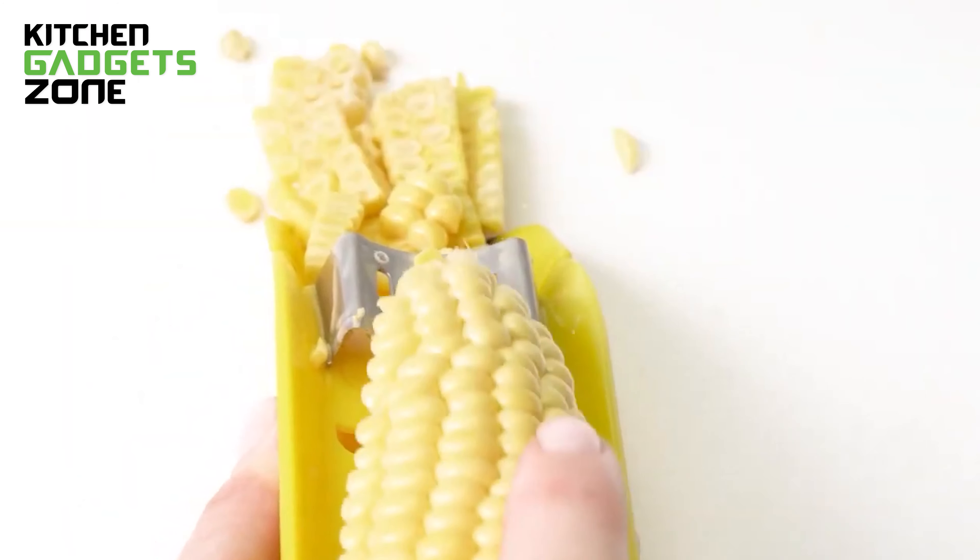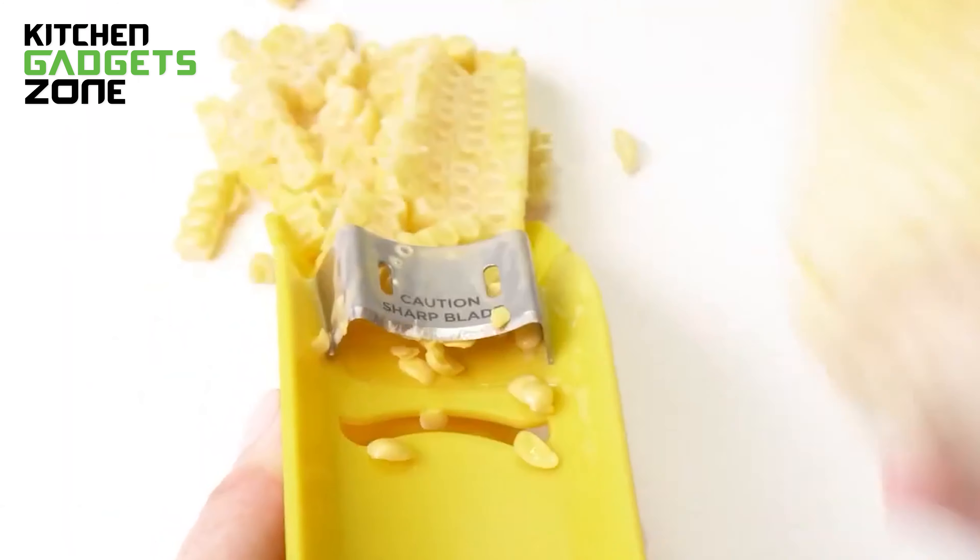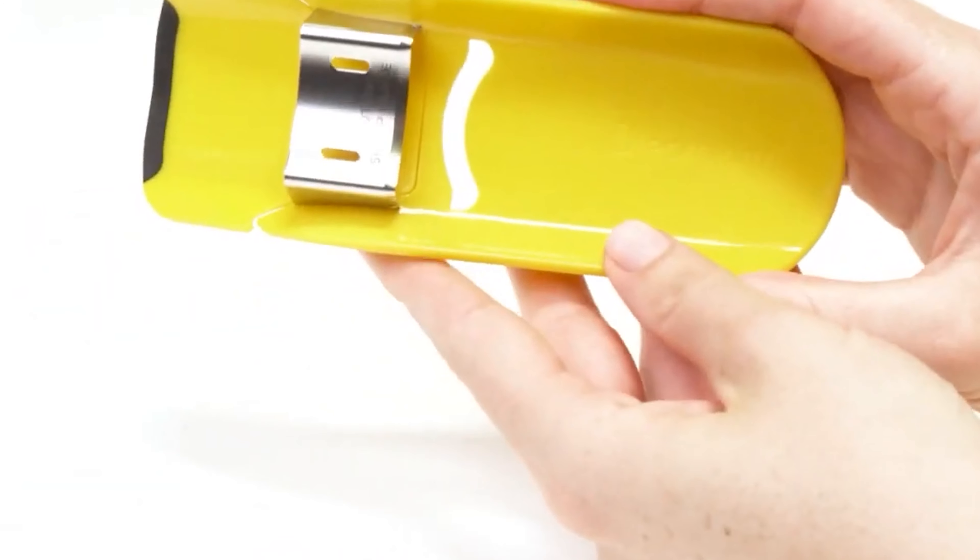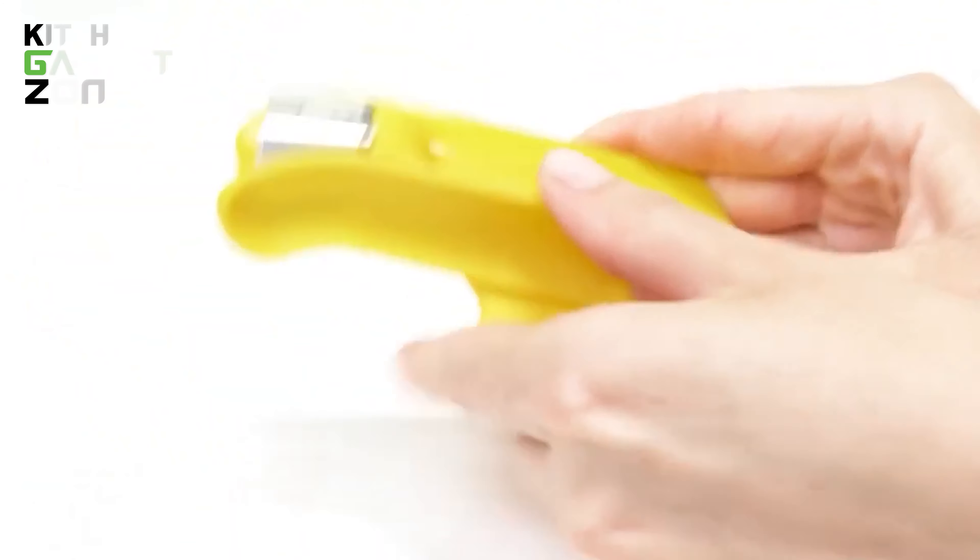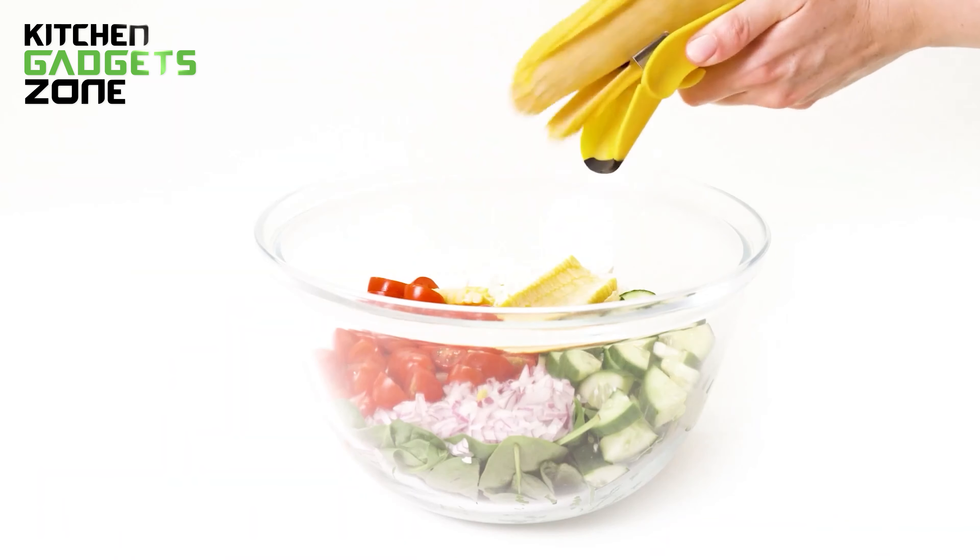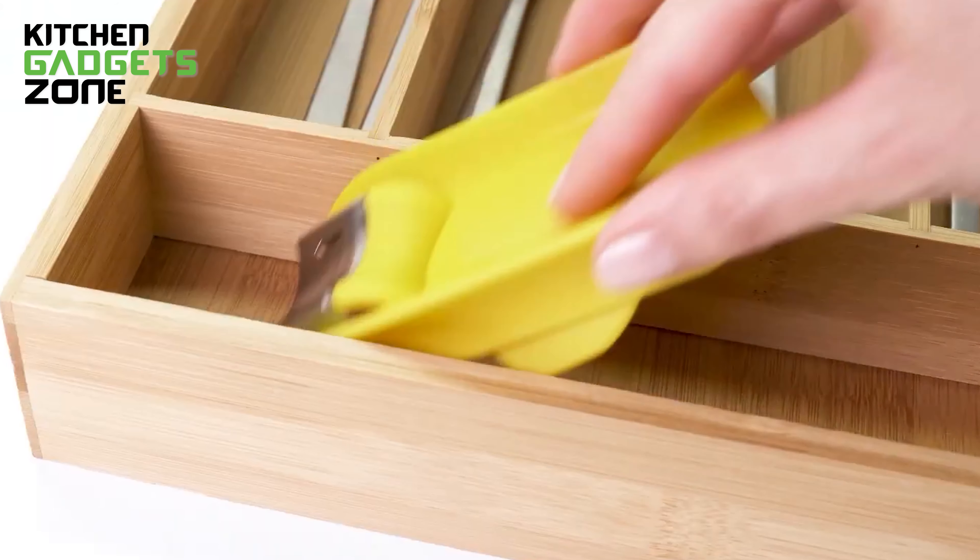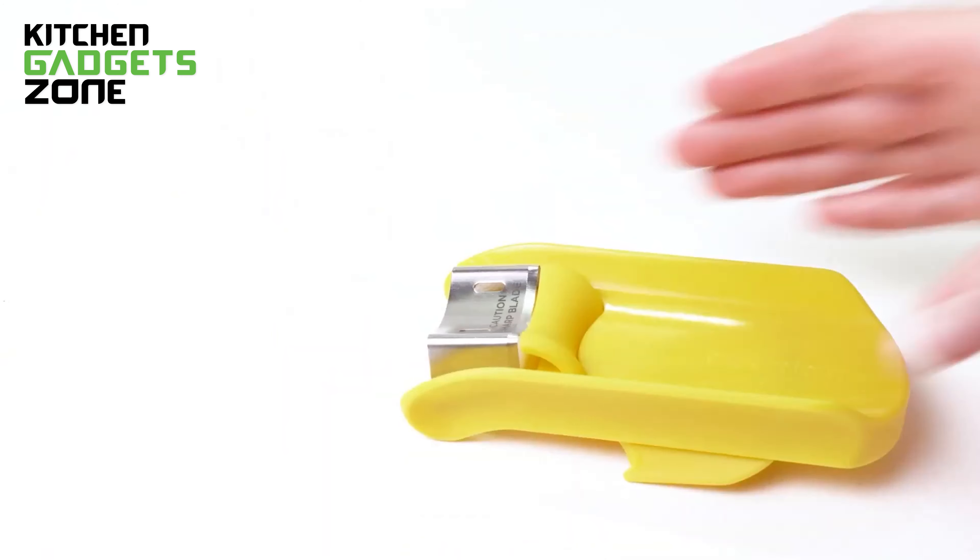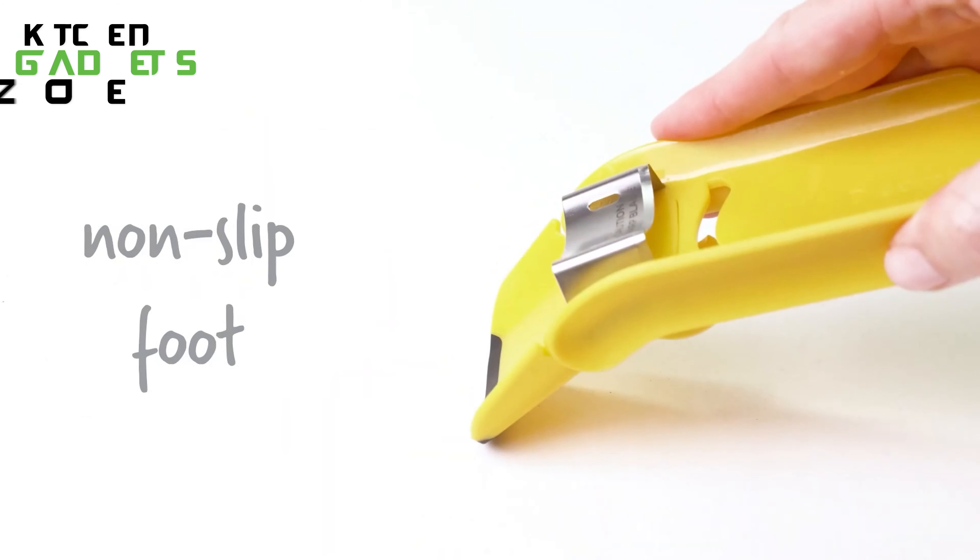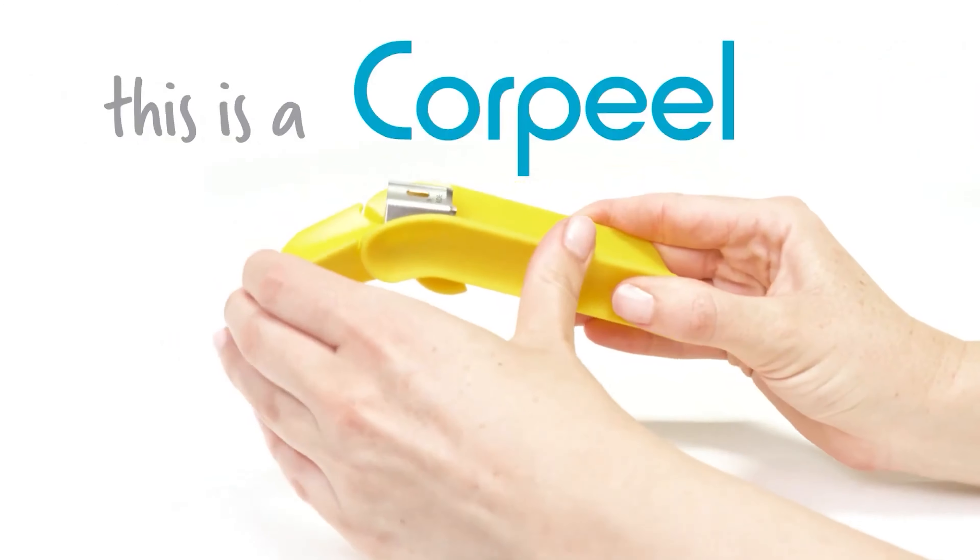The secret? A curved Japanese stainless steel blade that's angled just right to remove the kernels without digging into the cob. The built-in chute catches all those little golden nuggets in a neat pile, ready for your next corn fritter or summer salad. With its non-slip rubber foot and side grip channels, the Corpeel is as safe as it is efficient.